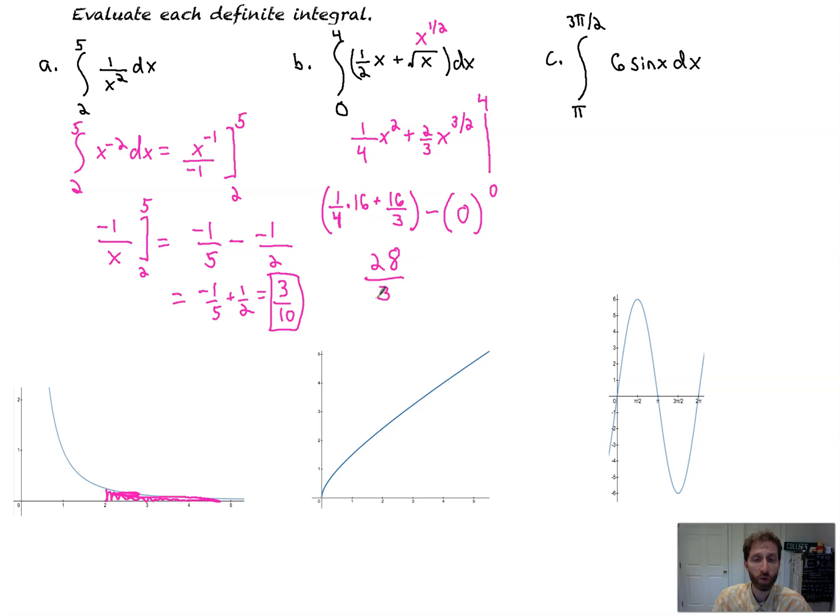That simplifies down to 28 over three. Four is 12 thirds plus 16 thirds. That's the area from zero to four, the exact area. It's so simple. And what you're doing here is you're adding up infinitely many tiny rectangles. That's quite a lot of work with not a lot of work to do.